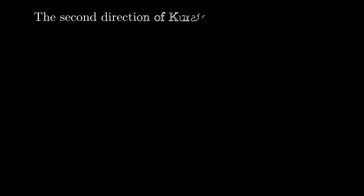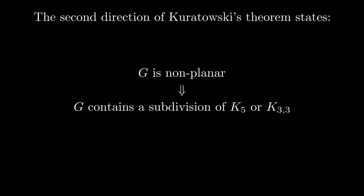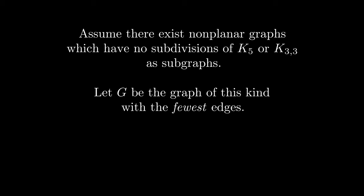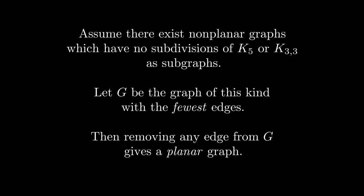The second direction of Kuratowski's theorem states that if G is a nonplanar graph, then it must contain a subdivision of K5 or K3,3. We'll proceed to proving this by contradiction. Assume that there exists some nonplanar graphs that do not contain subdivisions of K5 or K3,3. That is, consider the set of all counterexamples. Now let G be the graph with the fewest edges in the set of counterexamples. Thus, if we were to remove an edge from G, the resulting graph would be planar.